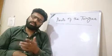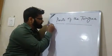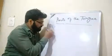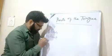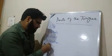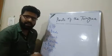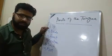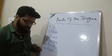Dear students, in today's video we are going to talk about the parts of the tongue. There are six parts of our tongue: the tip of the tongue, the blade of the tongue, the front of the tongue, the center of the tongue, the back of the tongue, and the root of the tongue.